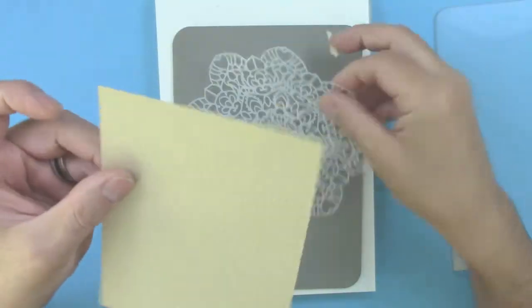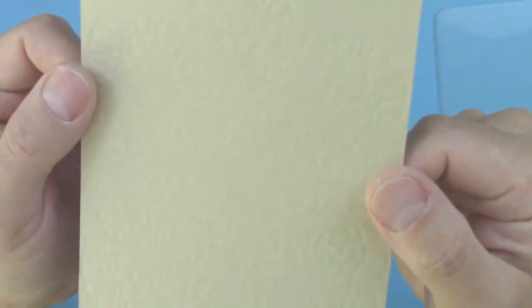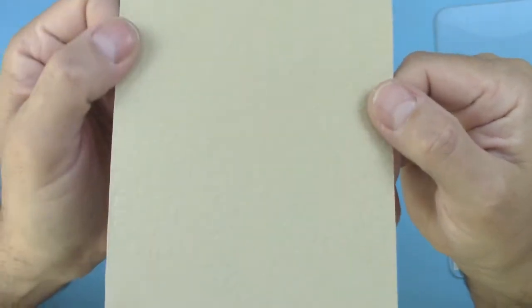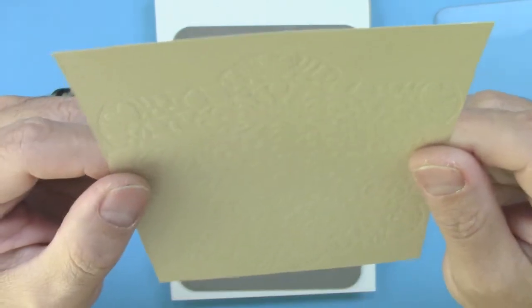Remove the stencil. And there you have it. A beautiful texture on your card stock. Very easy to make.